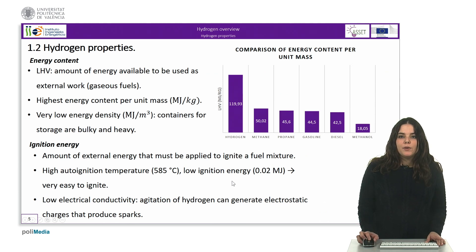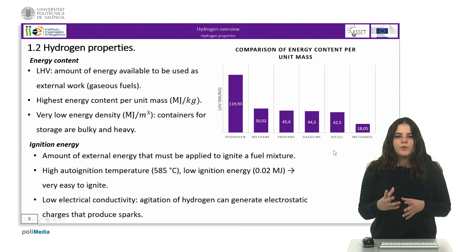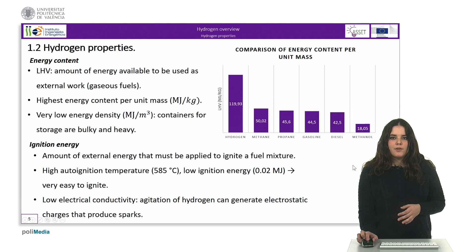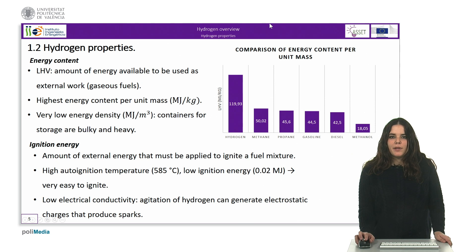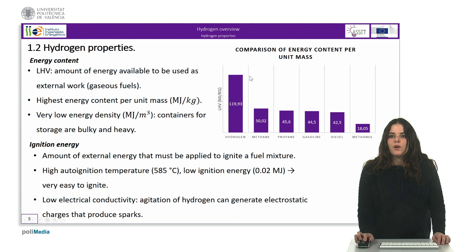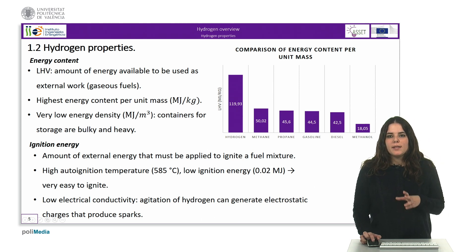When a fuel reacts with oxygen, a fixed amount of energy is released and water is formed. This released energy is quantified as the higher heating value or the lower heating value. Gaseous hydrogen is the fuel with the highest energy content per unit mass. As can be seen in the graph, for a certain amount of energy, the mass of hydrogen required is only about one-third of the mass of a hydrocarbon. For this reason, hydrogen has been widely used as a fuel in space programs where weight is crucial.